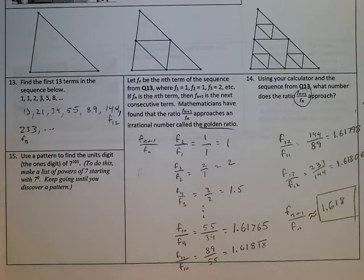So, for instance, 233 would be f13, the thirteenth term in sequence. Okay. And so, in general, we can call just any particular term in there fn, the nth term, using n just to mean that it could be any of these numbers. It could be the thirteenth, or the twelfth term, or the tenth term, or the seventh term.